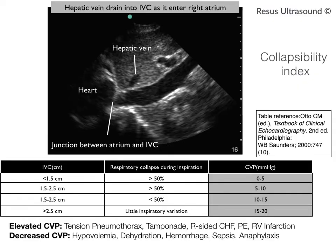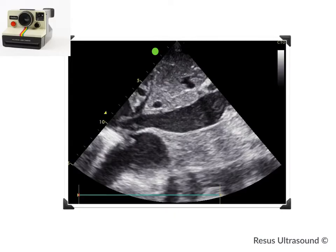This large non-collapsing IVC suggests the patient has high CVP or doesn't respond to volume. To summarize the collapsibility index: if the IVC is small — less than 1.5 cm, sometimes 1.7 cm — and collapses more than 50%, the patient has low CVP, possibly from sepsis, hypovolemia, or dehydration. If the IVC is large — more than 2.5 centimeters — and doesn't collapse at all, it indicates a condition where IVC cannot drain into the RA.